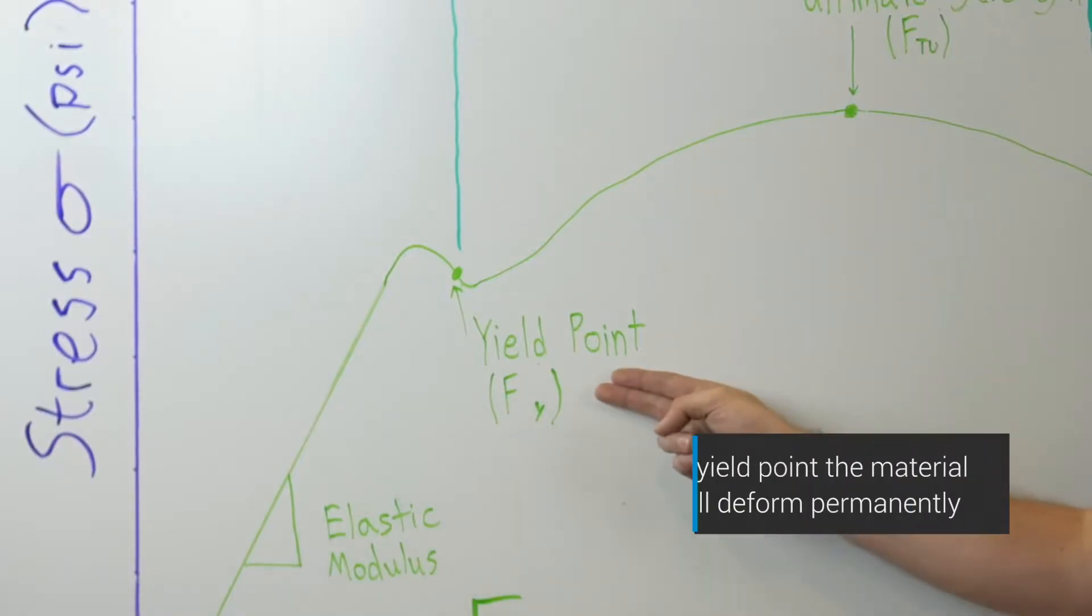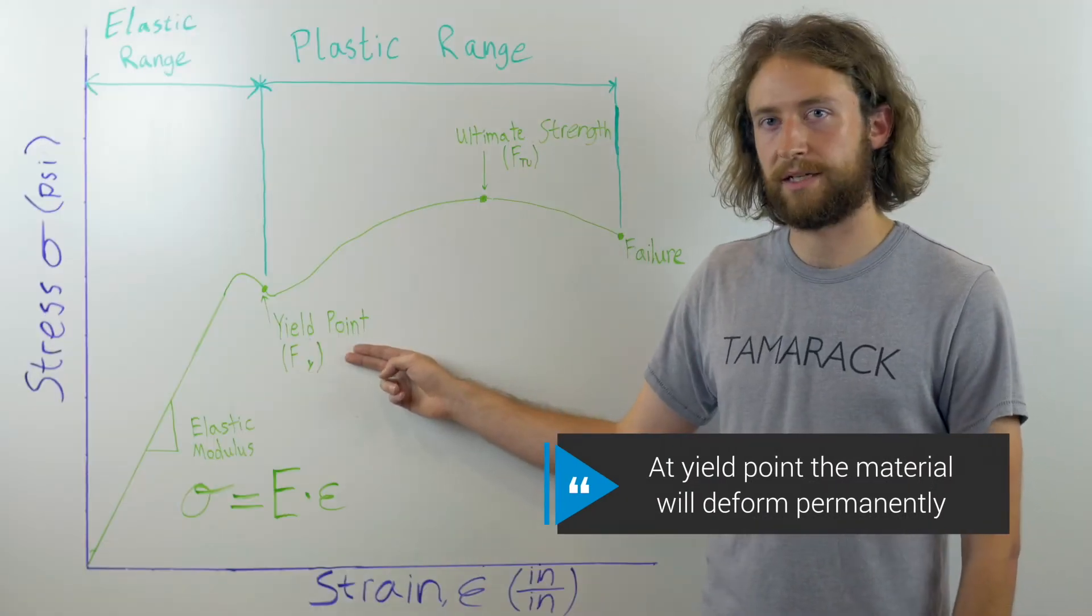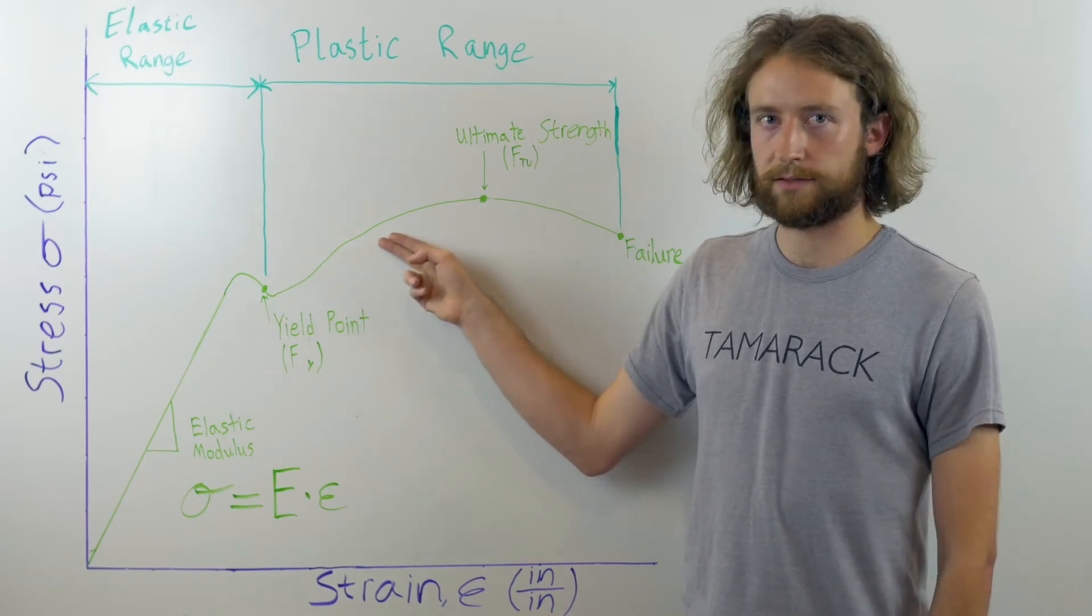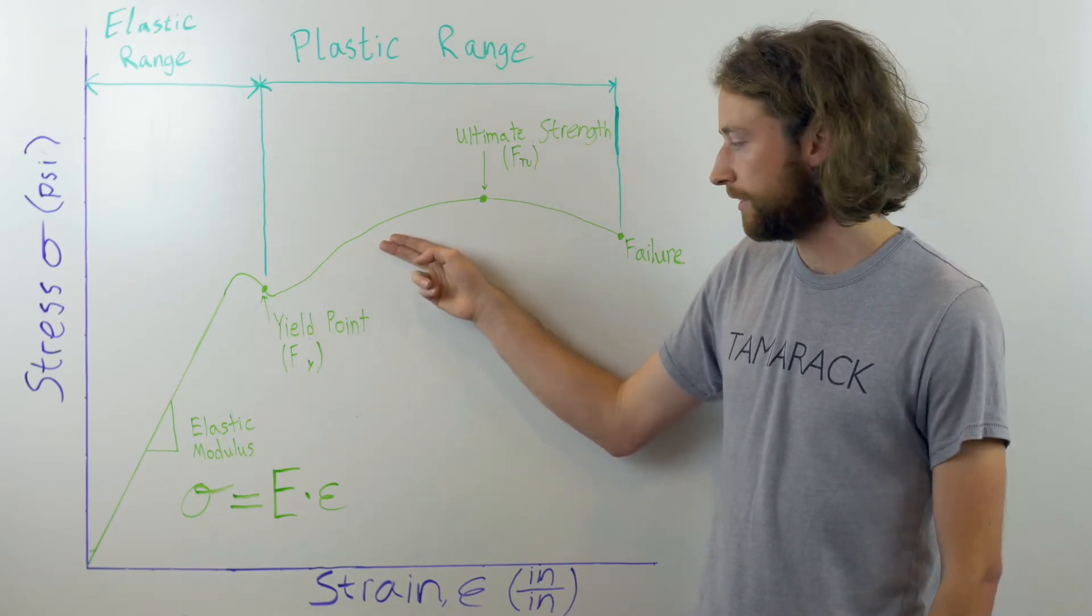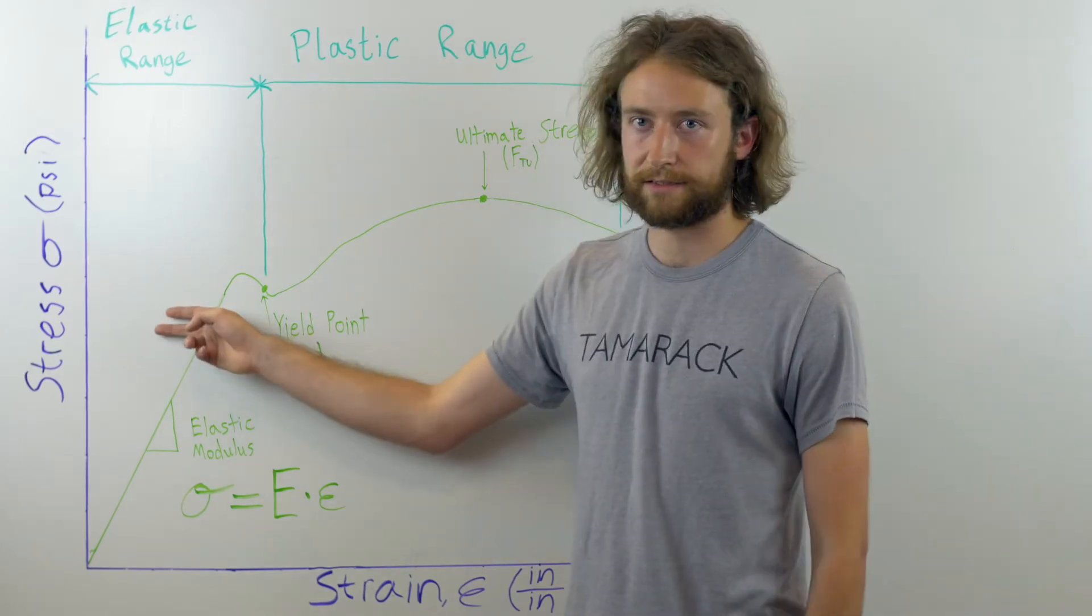The plastic range begins at the yield point where permanent deformation begins to occur. After permanent deformation the material is still going to be able to hold an increasing amount of stress, however the strain is going to increase at a much faster rate in the plastic range than it did in the elastic range.